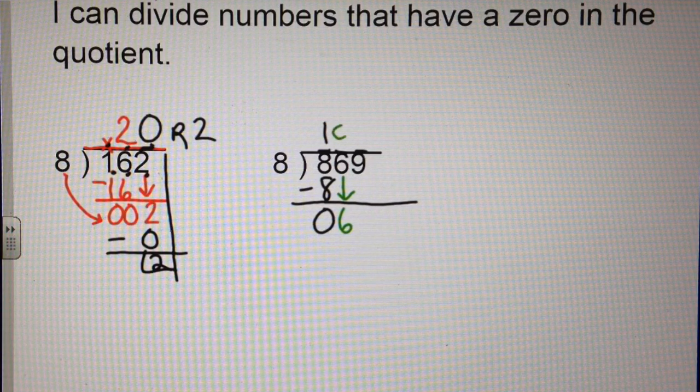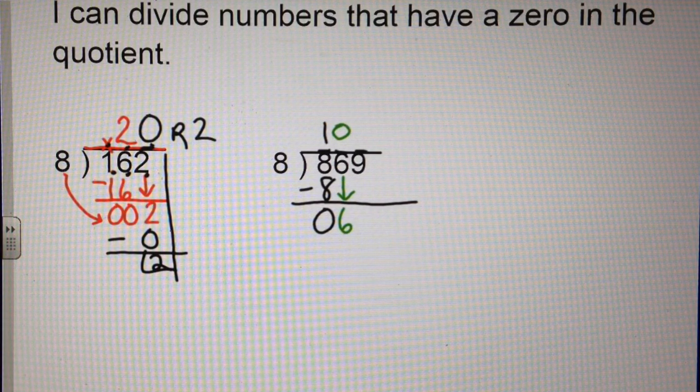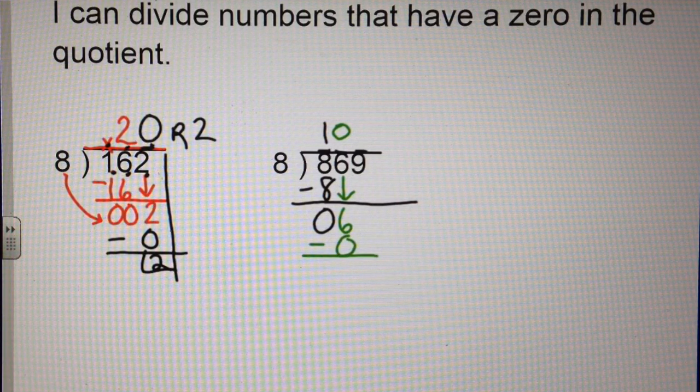But I have to put a 0 because it goes in 0 times. 0 times 8 is 0. And I subtract.